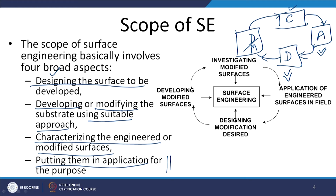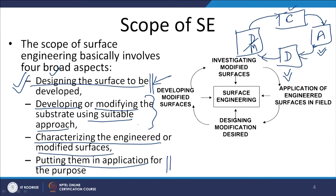Different processes have the capability to handle different metal systems — whether low or high melting point metals — and accordingly the extent of damage to material properties will be determined. The second aspect for comparing processes is their capacity to modify surfaces: what is the size of components they can handle, what area can be modified, what thickness a process can work with, and what is the depth from the surface that can be modified.